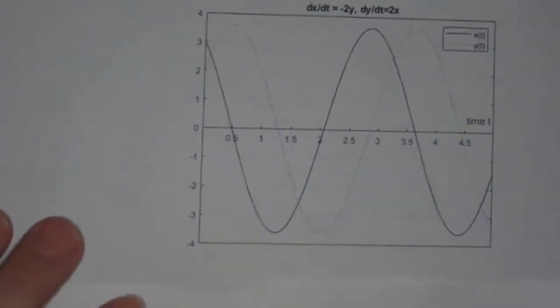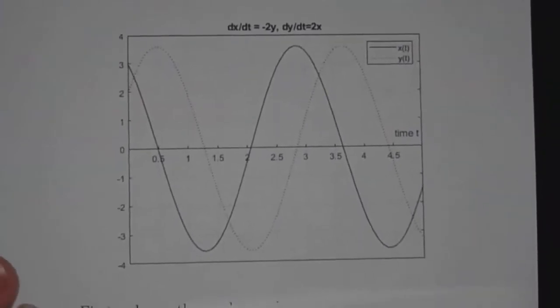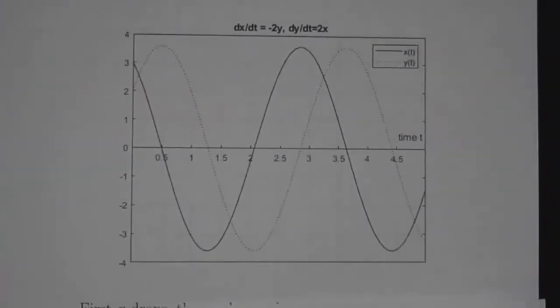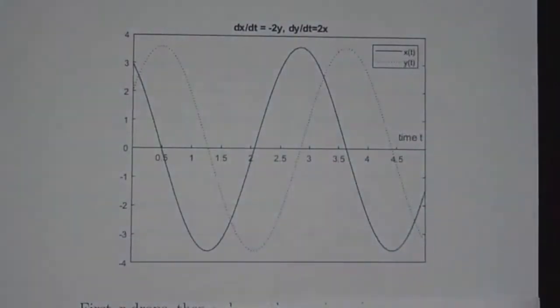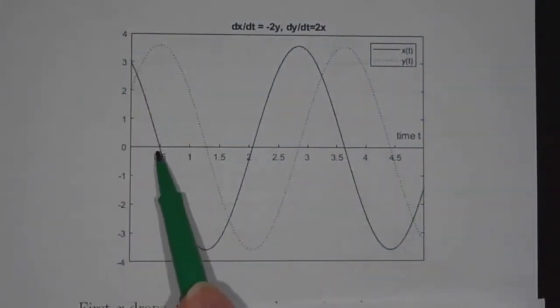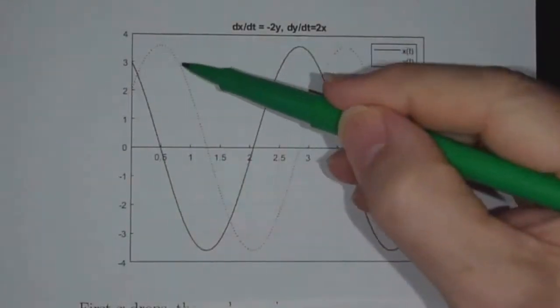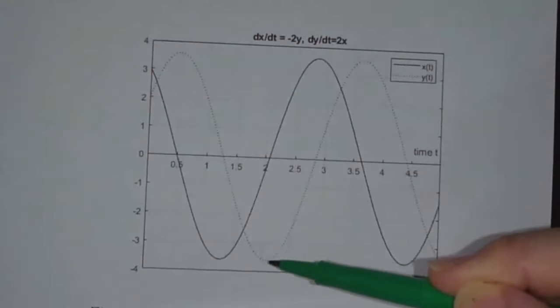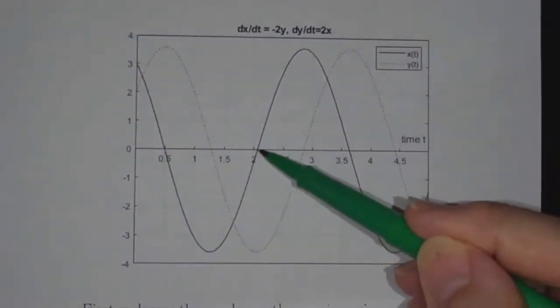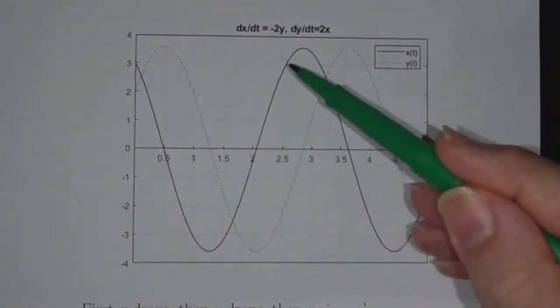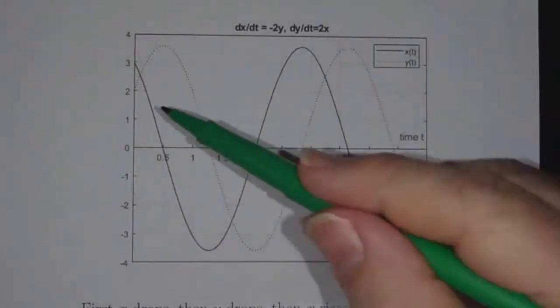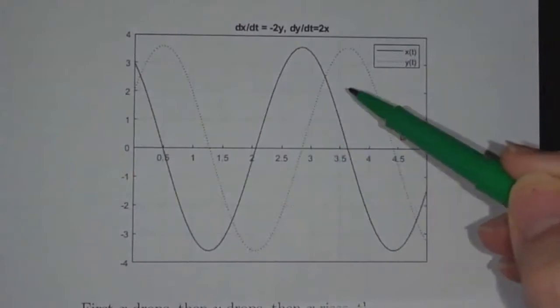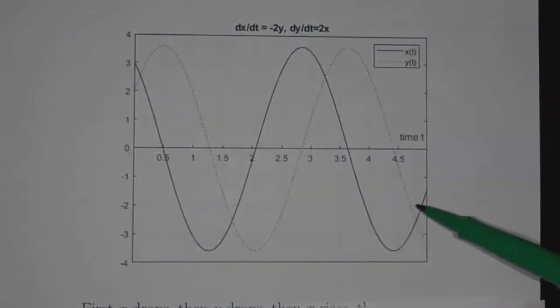Let's do a graph of it. Here's a graph where I took A equals 3 and B equals 2. So x starts off at 3 and goes down and up and down and up. And y starts at 2, goes up and down and up and down. But you notice, first x drops. Then while x is negative, y drops. Then while y is negative, x goes back up. Then while x is positive, y goes back up. So x drops, then y drops. Then x goes up, then y goes up. Then x drops, then y drops. Then x goes up, then y goes up. And it keeps on going over and over again.